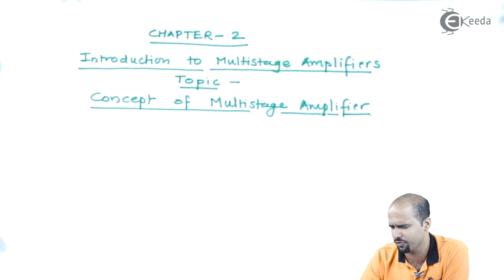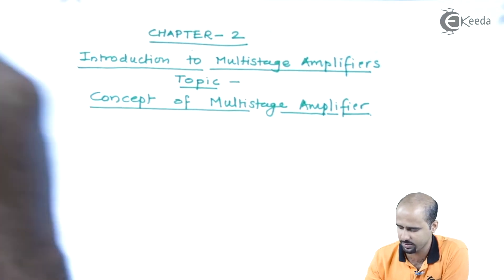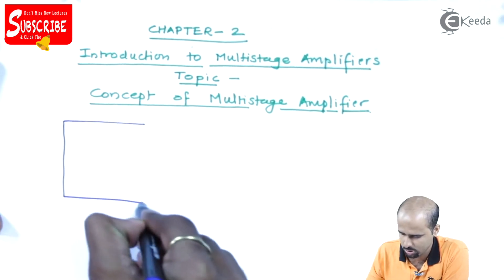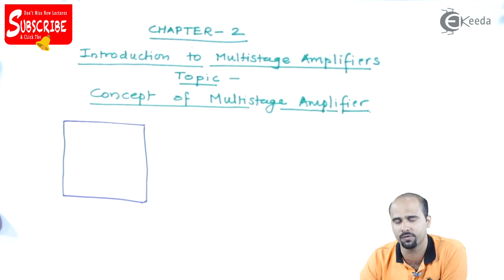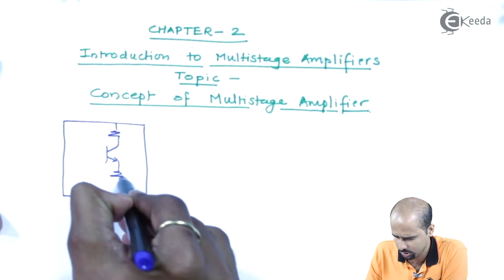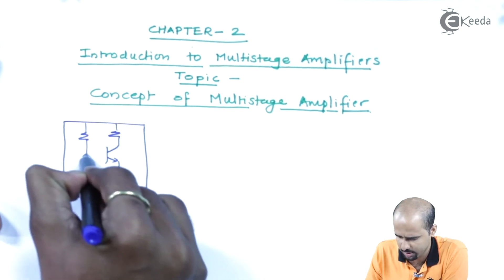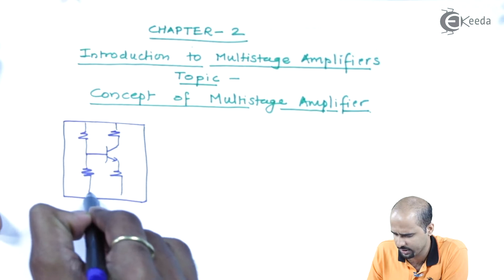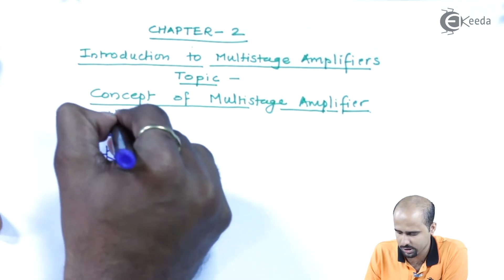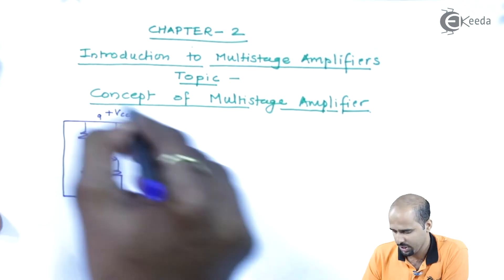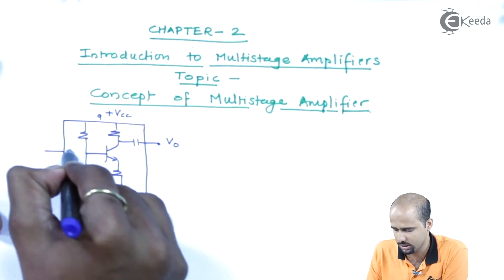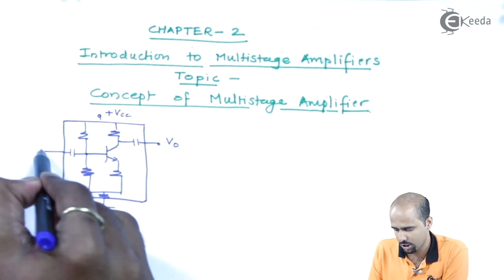Multistage means if we are taking only one transistor — let us take the simple example of this box. This box is acting as an amplifier. Let us have this circuit as a BJT with potential divider bias, which gives excellent stability. This is connected to ground and connected to the external supply VCC, and here we get the output. This is the input, VI.